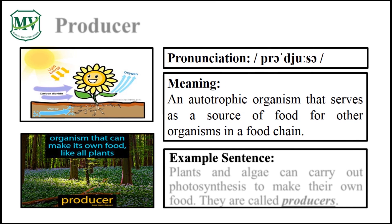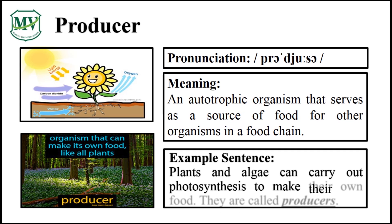Please repeat the word after me. P-R-O-D-U-C-E-R. Great! Plants and algae can carry out photosynthesis to make their own food. They are called producers. Can you try reading the sentence on your own? Great!